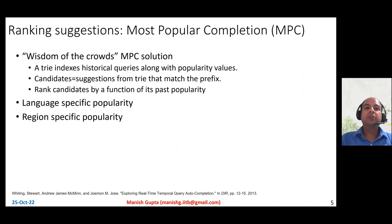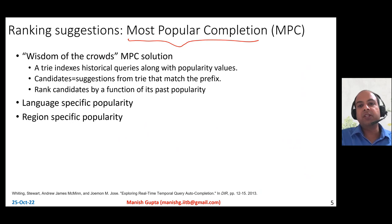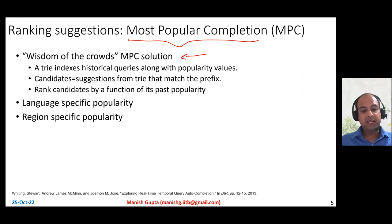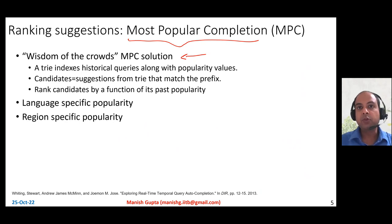Let's talk about how to rank suggestions — the basic method for ranking in a good query autocomplete system. This is called most popular completion, also known as the wisdom of the crowd solution. The idea is that you've been running the search engine for a long time, people have been querying a lot, and some queries have been put up many times. Whatever are the popular queries that start with the currently user-typed prefix — those are the ones you show at the top.